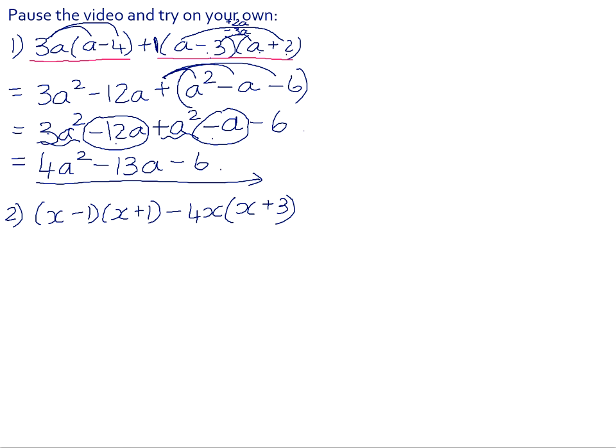In number 2, we also have two terms here. x minus 1 times x plus 1 is a sum and difference product. So revision of sum and difference products, we just multiply the first and the last. Here we need to do the distributive law. So negative 4x times x is negative 4x squared and negative 4x times positive 3 is negative 12x.